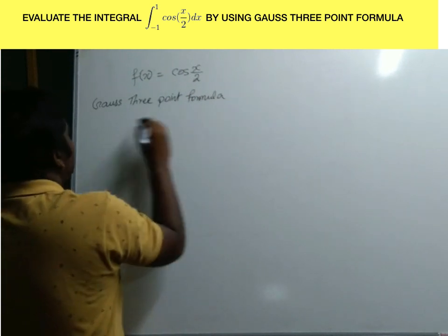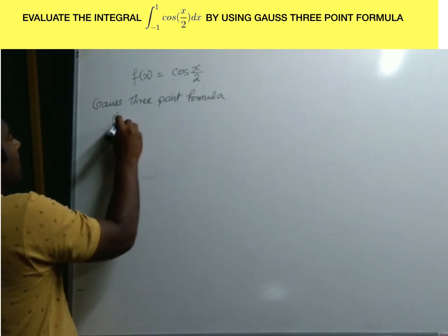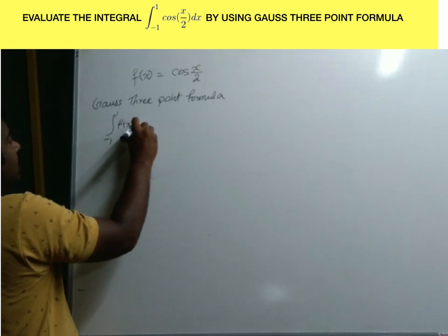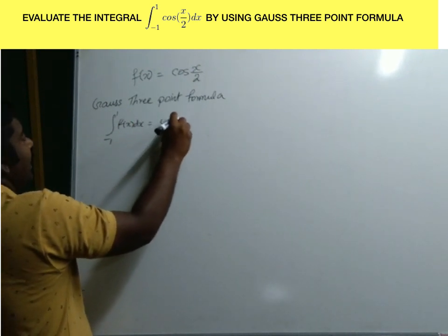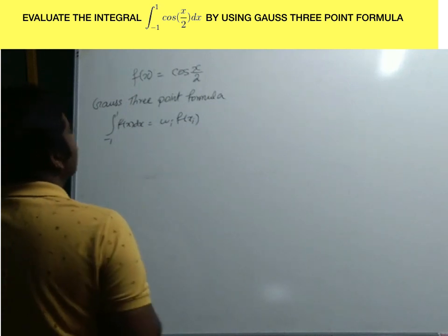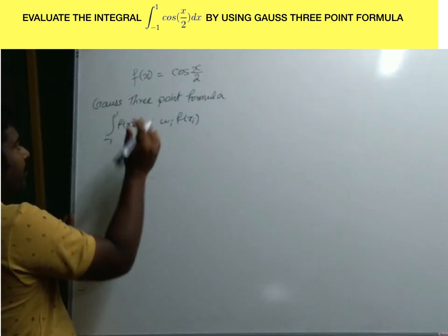The Gauss 3-point formula is: integral from minus 1 to 1 of f(x) dx equals the summation of w_i times f(x_i). This is the general formula for Gauss Quadrature.